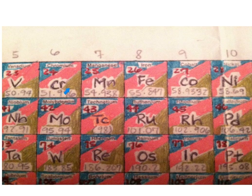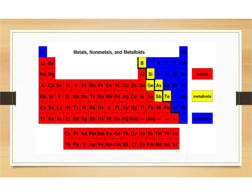We are going to start with our metals, nonmetals, and metalloids. As we do this, remember we're not coloring the entire box — we're only coloring in the top section. You'll have two other strips that are not colored in yet.